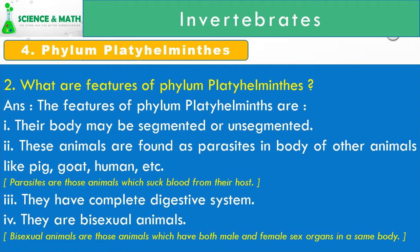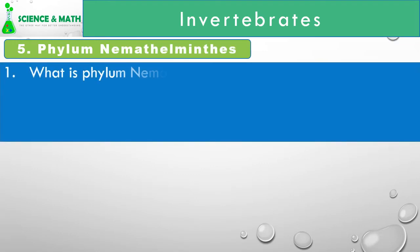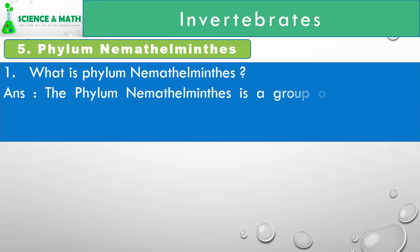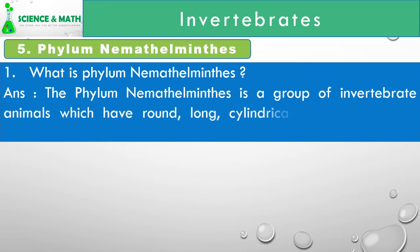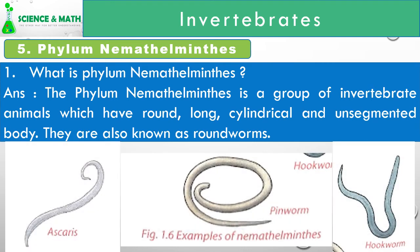These are some of the important features of animals that come under Phylum Platyhelminthes. Many more other features can also be observed. Now, let's go to Phylum Nematohelminthes. The Phylum Nematohelminthes is a group of invertebrate animals which have round, long, cylindrical, and unsegmented body. They are also known as roundworms. For example, Ascaris, Pinworm, and Hookworm.